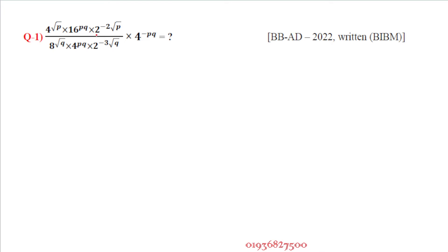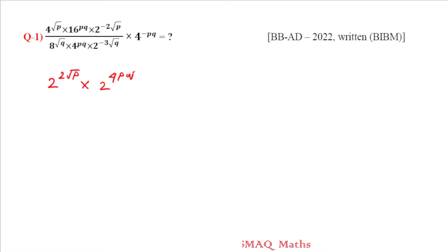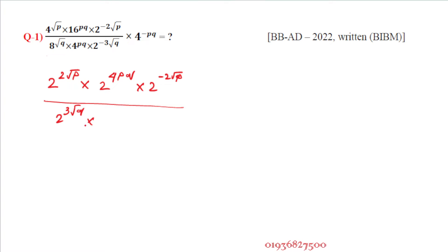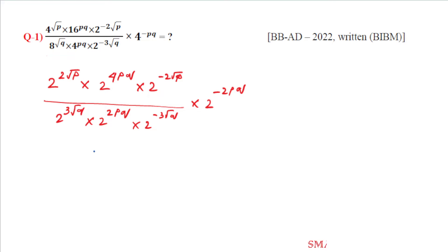We can see the bases are 4, 16, 2, 8, 4 — all with prime base 2. So we convert everything to base 2: 4 to the power root p becomes 2 to the power 2 root p; 16 becomes 2 to the power 4pq; 2 to the power negative 2 root p stays; 8 becomes 2 to the power 3 root q; 4 becomes 2 to the power 2pq; 2 to the power negative 3 root q stays.